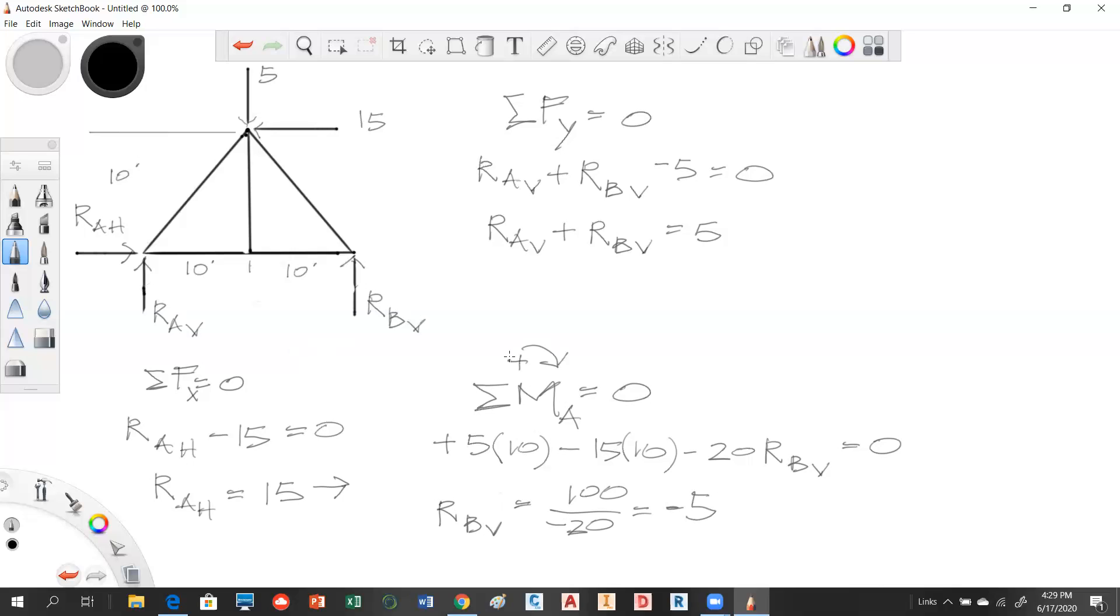So what that indicates is that we missed this one. So instead of going up, it's actually going down. So this one has a downward reaction. So when we plug this in, we plug it in with its sign. So that tells me that RAV minus 5 is equal to 5, and so therefore RAV is equal to 10 kips positive acting up.